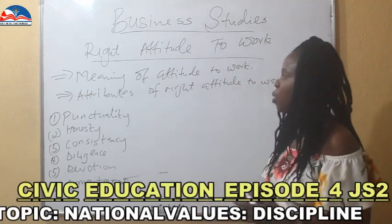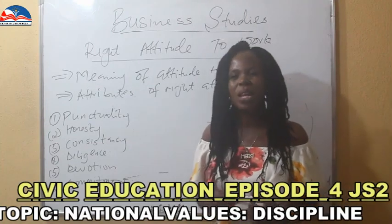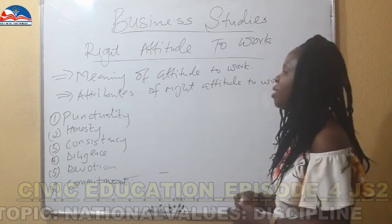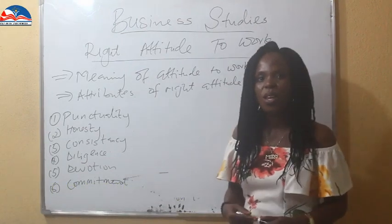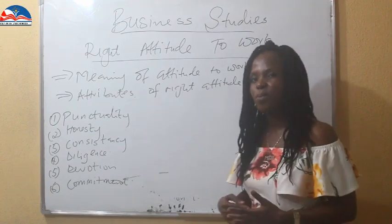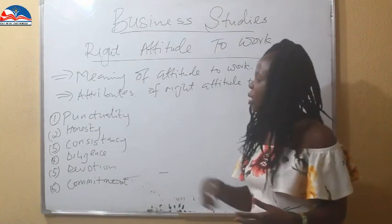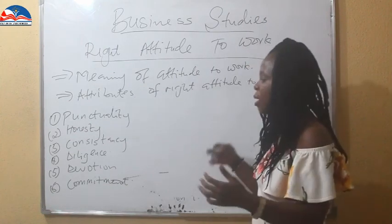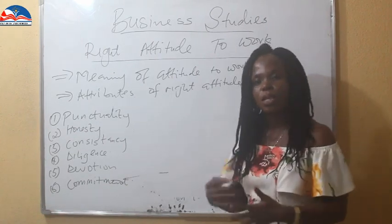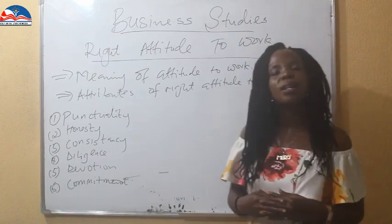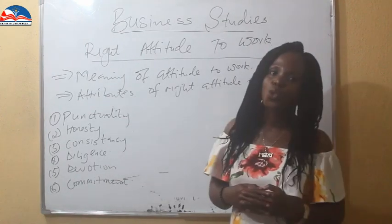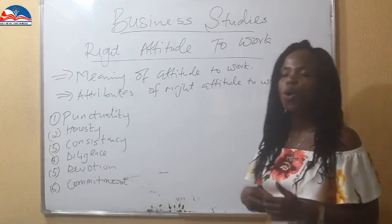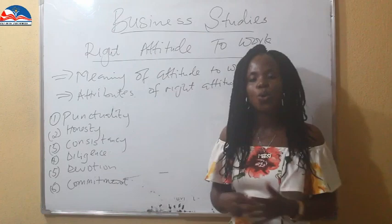So we have seen some of the attributes. The attributes are so many — you can name more than 50 — I just picked six. Please put in the six I have mentioned in your business: be punctual, be honest, be consistent, be diligent in whatever you do, devote time and energy, and be committed to your business. This will help you. We have seen the attributes of good attitude to work, and we will still take part two of right attitude to work — other areas that will help our business grow.